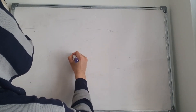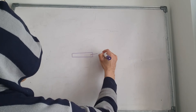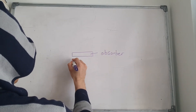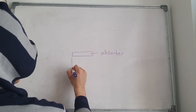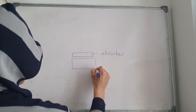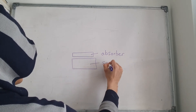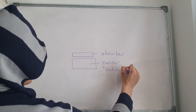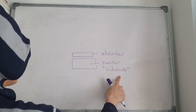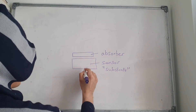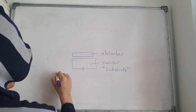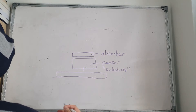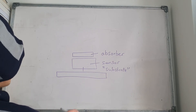Here you've got the absorber, and here's the sensor — it's probably a substrate of some kind. The substrate is connected to the absorber, and it's also connected to a heat reservoir. A heat reservoir is a heat source that has a large heat capacity.